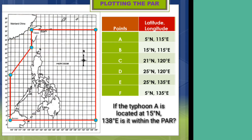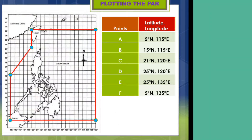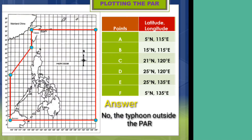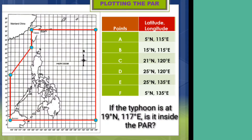If typhoon A is located at 15 degrees North, 138 degrees East, is it within the PAR? If your answer is no, you are correct — the typhoon is outside the PAR. If the typhoon is at 19 degrees North, 170 degrees East, is it inside the PAR? No, the typhoon is outside the PAR.